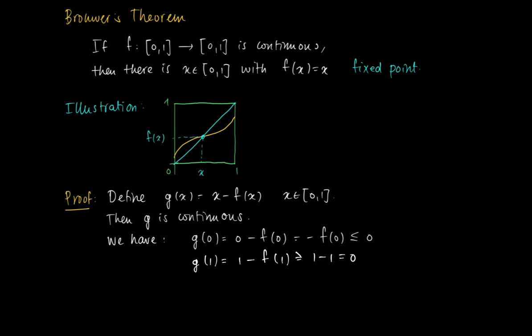So what we get now is that the value in 0 is smaller equal than 0 and smaller equal than g of 1.